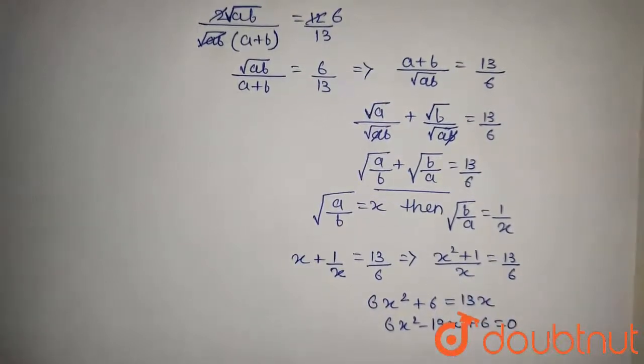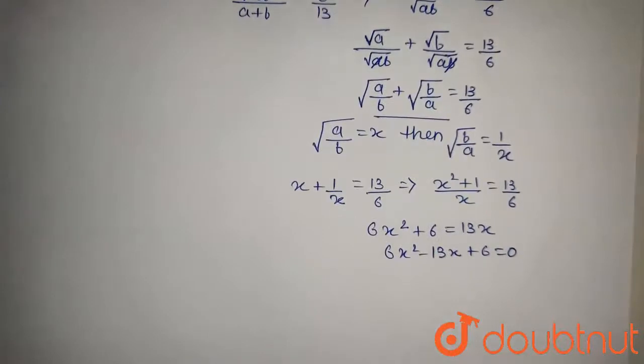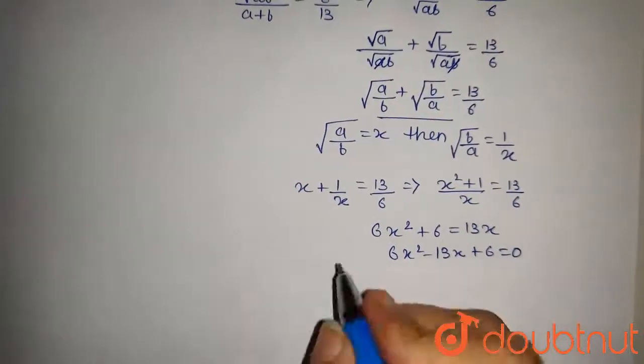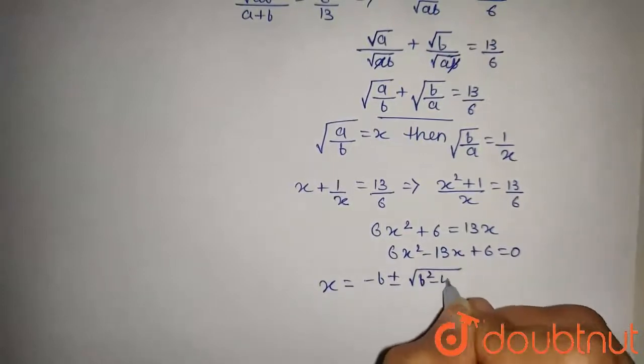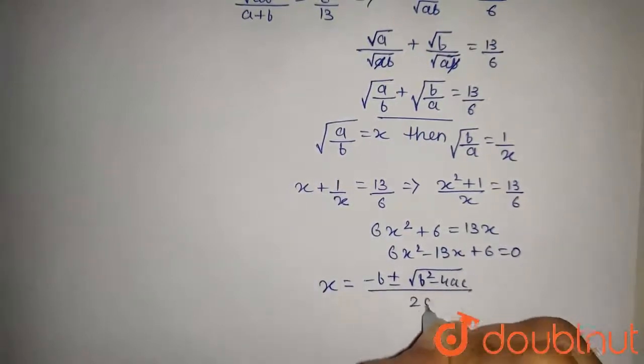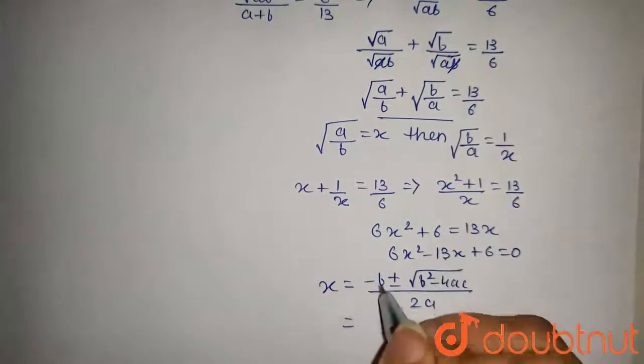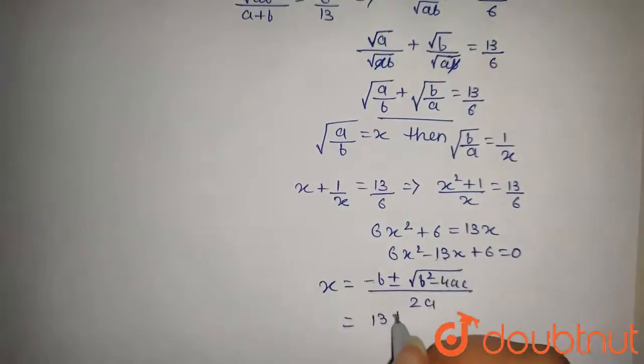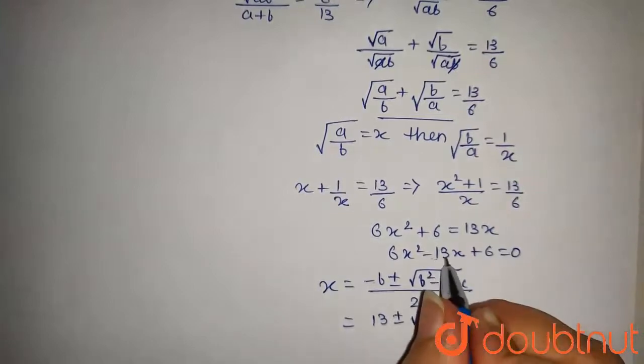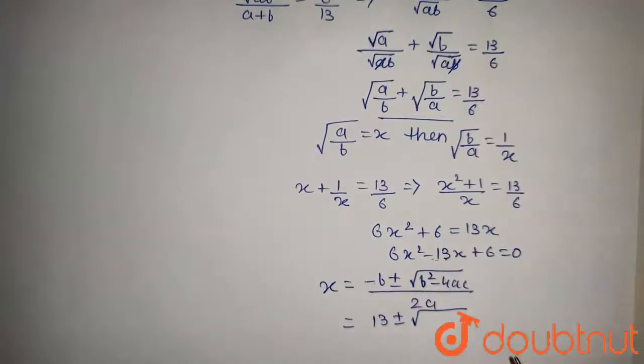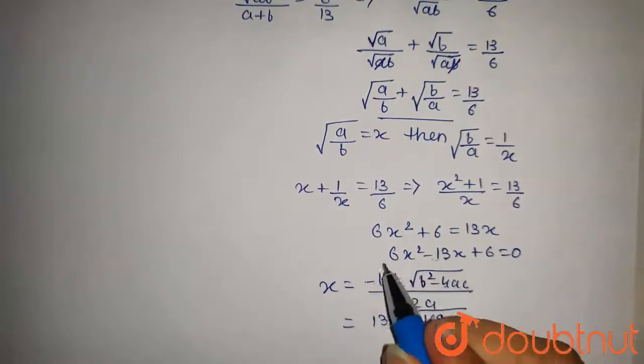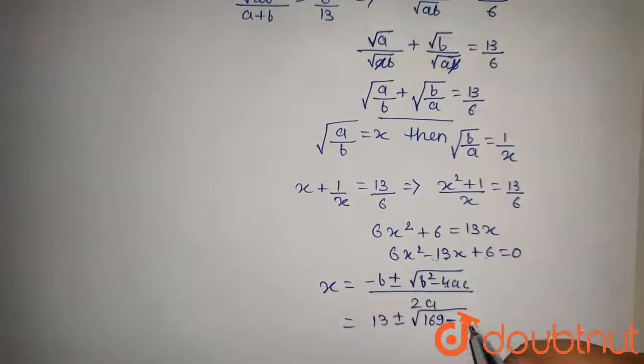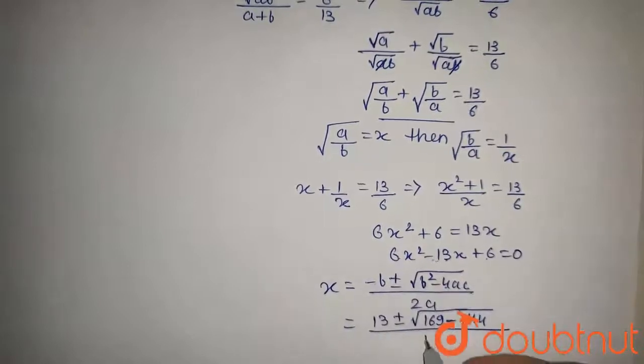We will find the roots of this equation by the quadratic formula. The quadratic formula is X is equal to minus B plus minus under root B squared minus 4AC upon 2A. Here B is minus 13 so minus B will be 13 plus minus under root B squared will be minus 13 squared that is 169 minus 4AC that is 4 into 6 into 6. This will be 144 upon 2 into 6 that is 12.